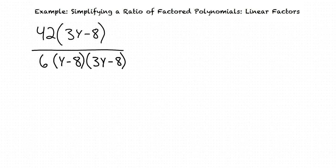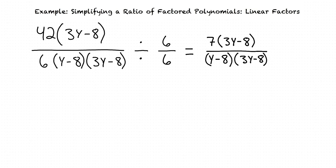Once again, we want to divide the numerator and denominator by the greatest common factor of our coefficients. The greatest common factor is 6, so we divide by 6 over 6. This leaves us with 7 times (3y minus 8) divided by (y minus 8) times (3y minus 8). Now we look for the linear factors that are the same in both the numerator and the denominator, and we can see that (3y minus 8) appears in both.